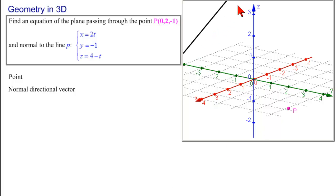Here is our line p, and what we need to do is make a directional vector from this line. And then we have a normal directional vector and a point, and we can make the plane.